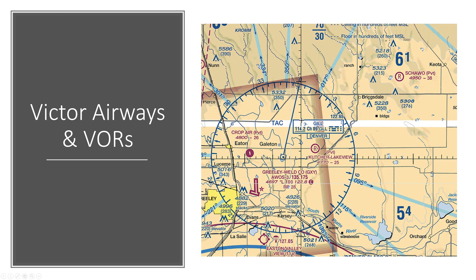One more thing to understand is Victor Airways and VORs. A VOR is basically a navigation beacon that airplanes fly towards, and they follow these Victor Airways — the blue lines you see on the chart. If you were planning a towing competition, it probably wouldn't be a good idea to do it right near these VORs, because so many airplanes converge on them. Staying away from Victor Airways will help ensure you're away from heavy airplane traffic, though you are allowed to fly near them — just be aware that's where airplanes are coming from.